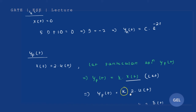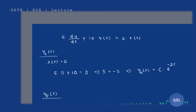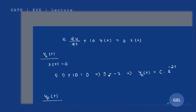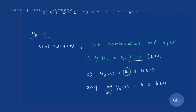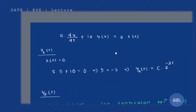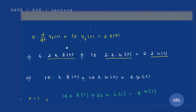To find k, we put the assumed y_p value into the main equation. We need d/dt of y_p(t) = k · 2 · δ(t), since the differentiation of u(t) is δ(t). Substituting into the equation gives: 5 · 2k · δ(t) + 10 · 2k · u(t) = 2 · 2 · u(t).